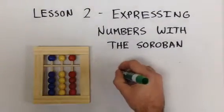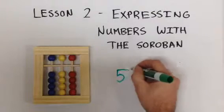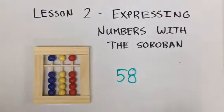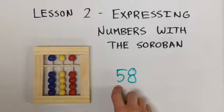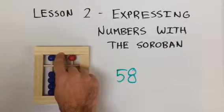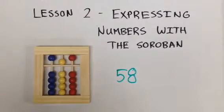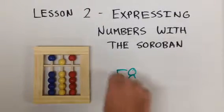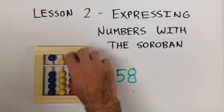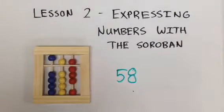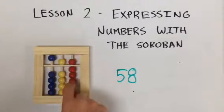How about the number 58? We go to our 10s and move down the upper yellow bead for 50. We have eight 1s, so we move the top red bead and three lower beads to the answer line. This is the number 58.